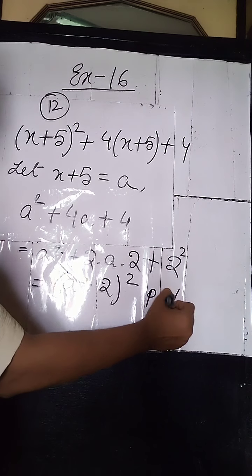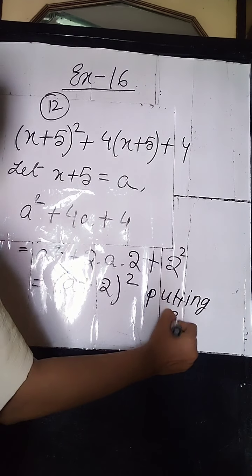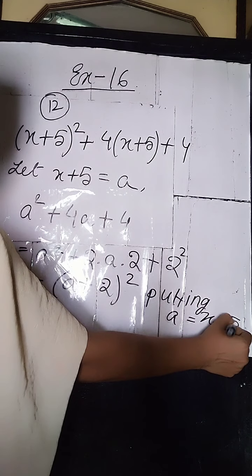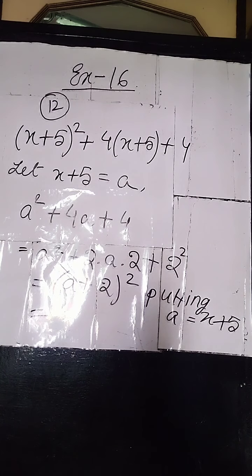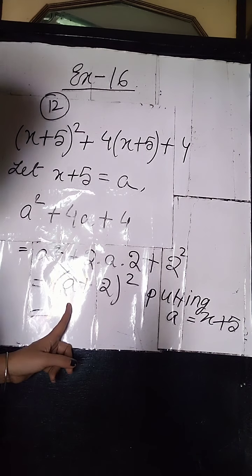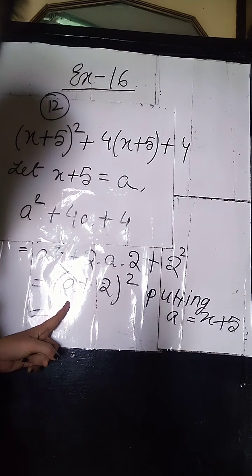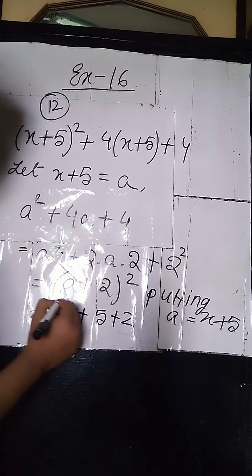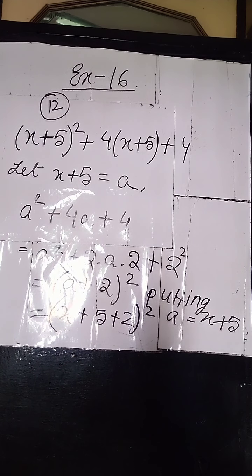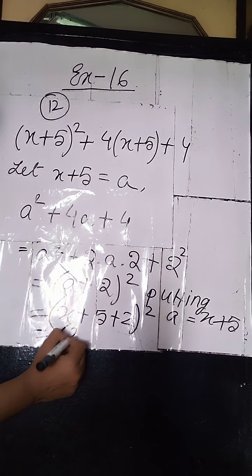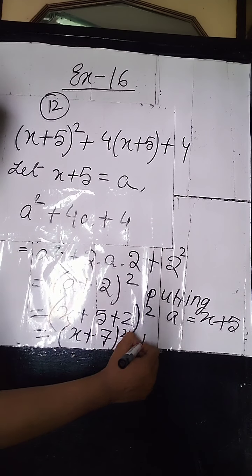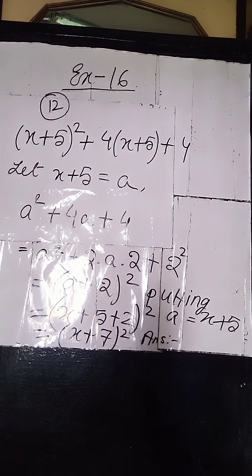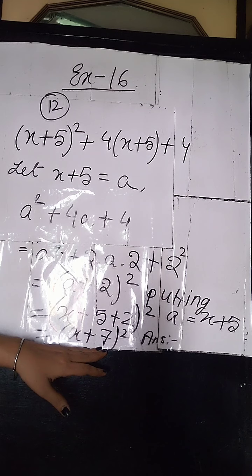Putting A equals to x plus 5 back in, we replace A with its actual value: x plus 5 plus 2, whole square. This becomes x plus 7, whole square. So this is the answer of the sum — x plus 7 whole square. You can leave the answer here and you will get full marks.